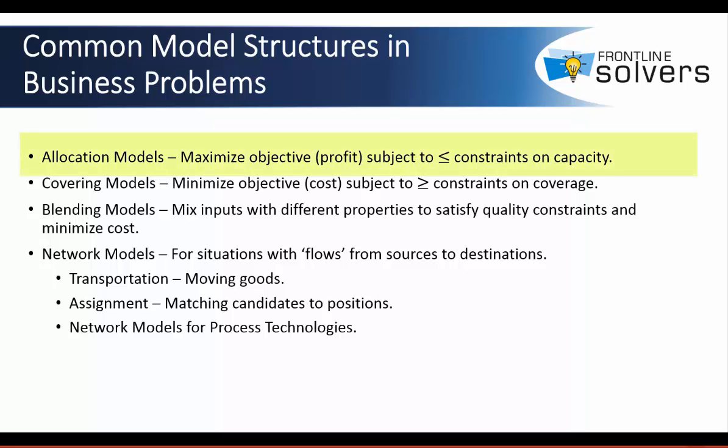Allocation models seek to maximize profit with constraints and capacity. The goal of covering models is to minimize cost restricted by coverage constraints. The portfolio optimization model was a combination of allocation and covering models, as we are minimizing risk of a specific rate of return and ensuring that total funds are invested.